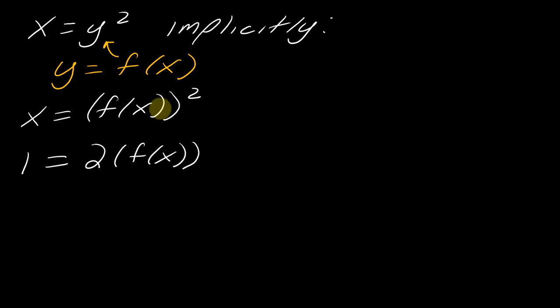But the chain rule says, you take the derivative of the outermost function, and then you multiply that by the derivative of the inside function. Now, I might not know what f of x is, but I can represent the derivative, right? So the derivative of this would be f prime of x.